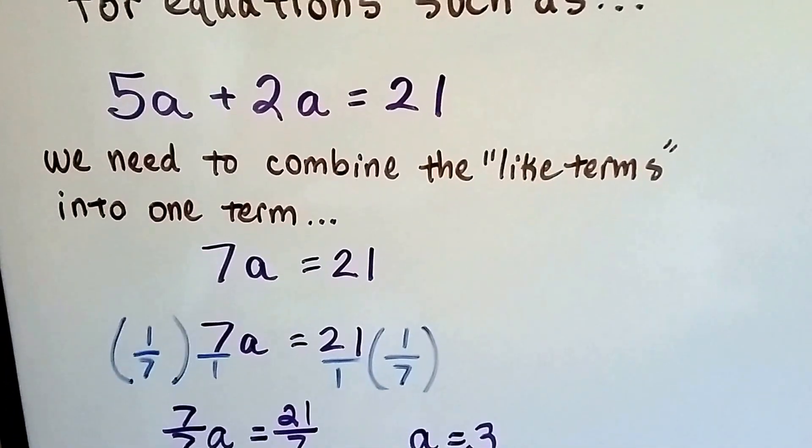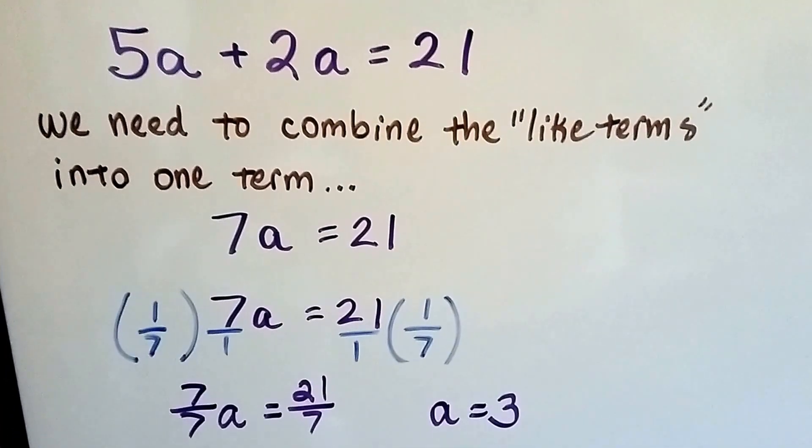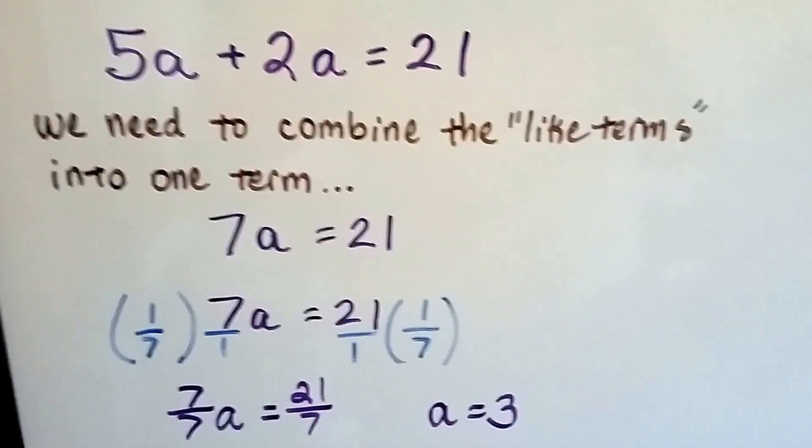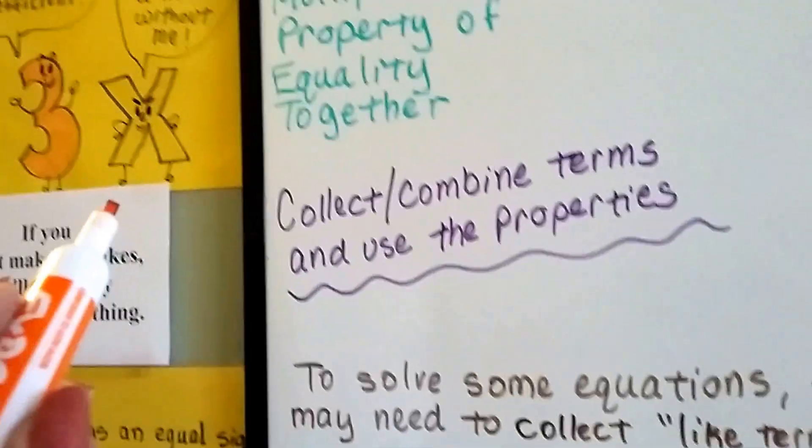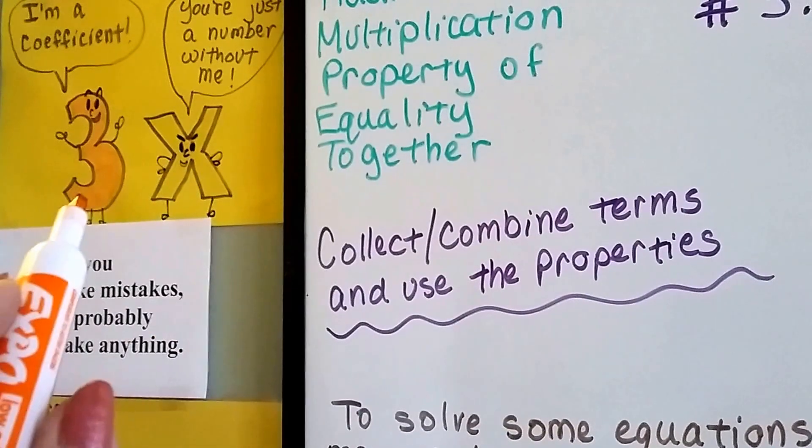Now, all we have to do is multiply both sides of the equation by the reciprocal of the coefficient. And remember, the coefficient is the number in front of the variable.